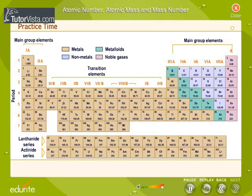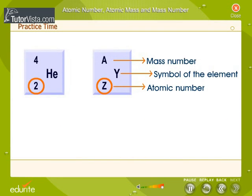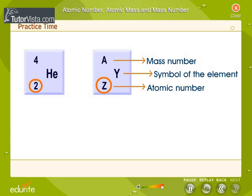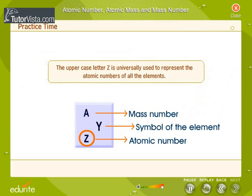In the periodic table, the precise address of the atoms of all the elements known to man is given. The atomic number is the whole number that is associated with the symbol of each element. Atomic number is written as a subscript to the left of the symbol of the element. The uppercase letter Z is universally used to represent the atomic numbers of all the elements.